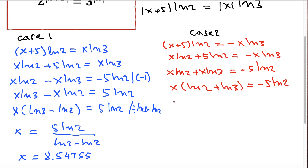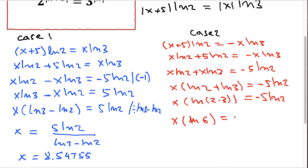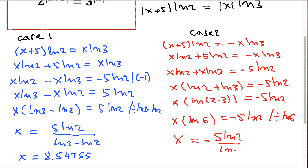According to the properties of logarithms, LN 2 plus LN 3 can be written as LN (2 times 3), which is LN 6. So we have x times LN 6 equals negative 5 LN 2. Dividing everything by LN 6, x equals negative 5 LN 2 divided by LN 6. Plugging into a calculator, x is approximately negative 1.93426, with more decimal places continuing beyond that.